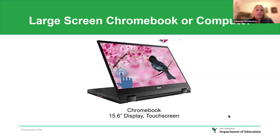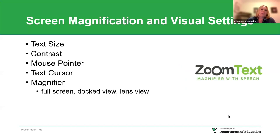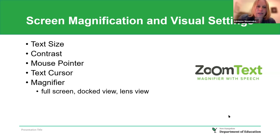AT&NH also has a large screen Chromebook — a 15.6 inch touchscreen display — available to borrow and trial with students. On both the Chromebook and a computer, built-in accessibility features include adjustable text size, contrast, mouse pointer size, text cursor, and a magnifier with options for full screen, docked view, or lens view. If a student needs a more powerful program, ZoomText can be ordered through the American Printing House for the Blind for a student license.